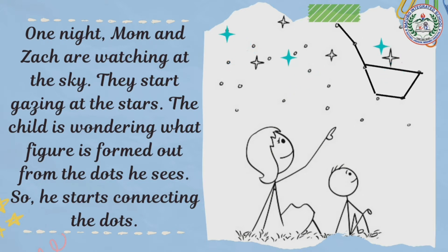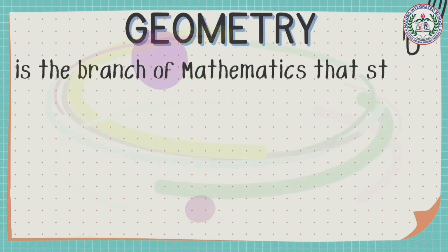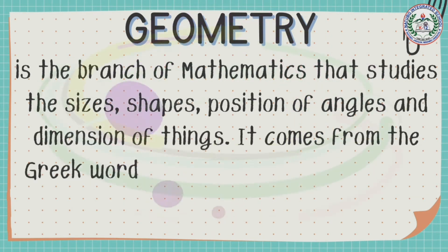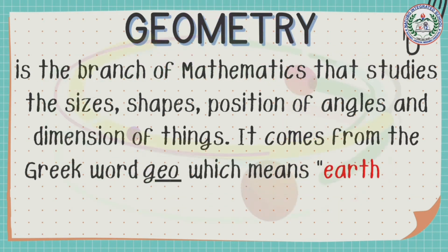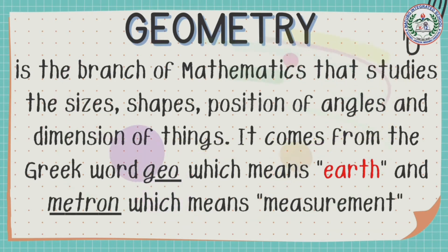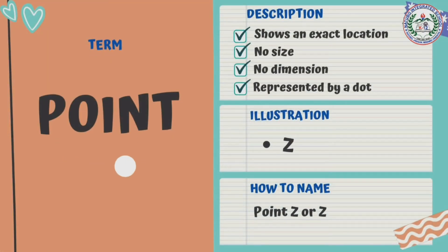But first, what is geometry? Geometry is the branch of mathematics that studies the sizes, shapes, position of angles, and dimensions of things. It comes from the Greek word geo, which means earth, and metron, which means measurement. Now, let's talk about the 3 terms in geometry. First, we have the point.